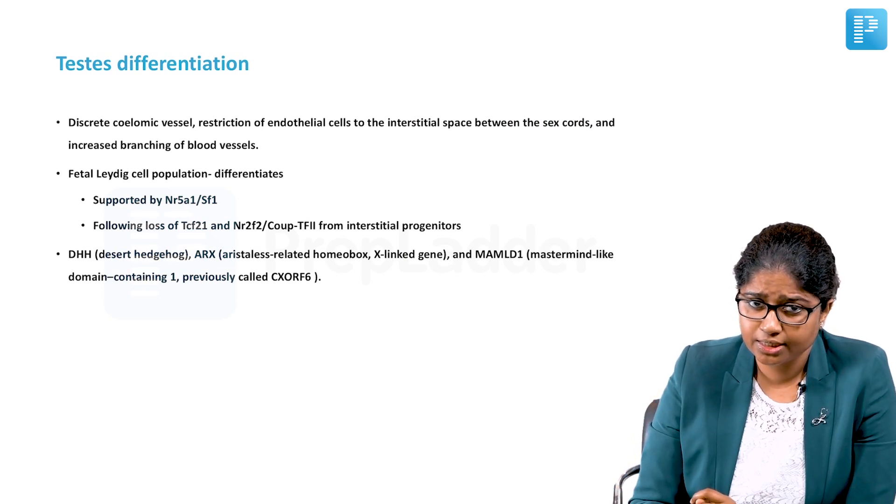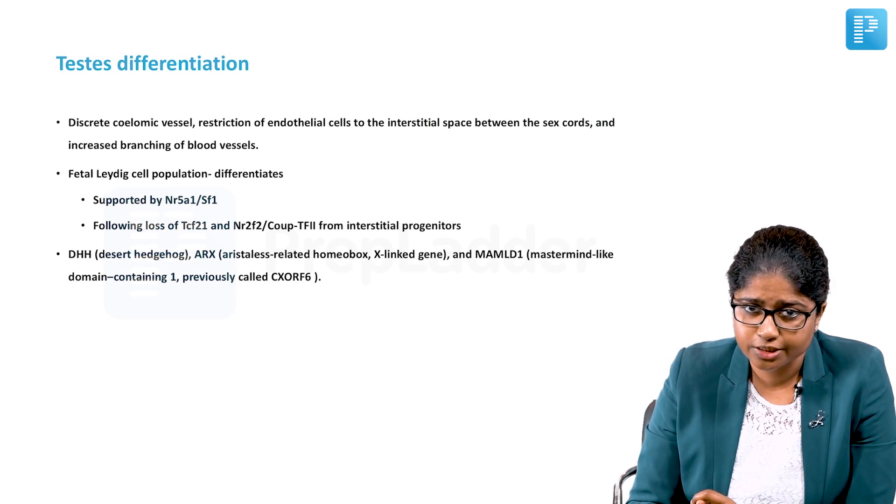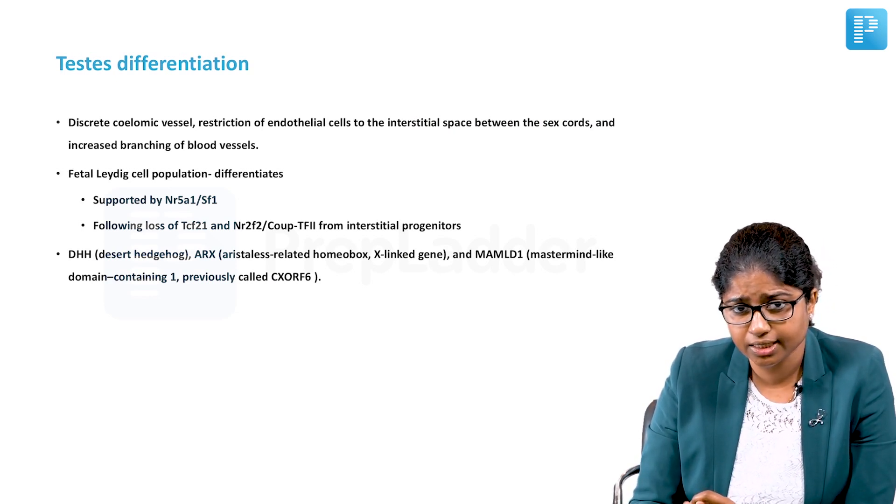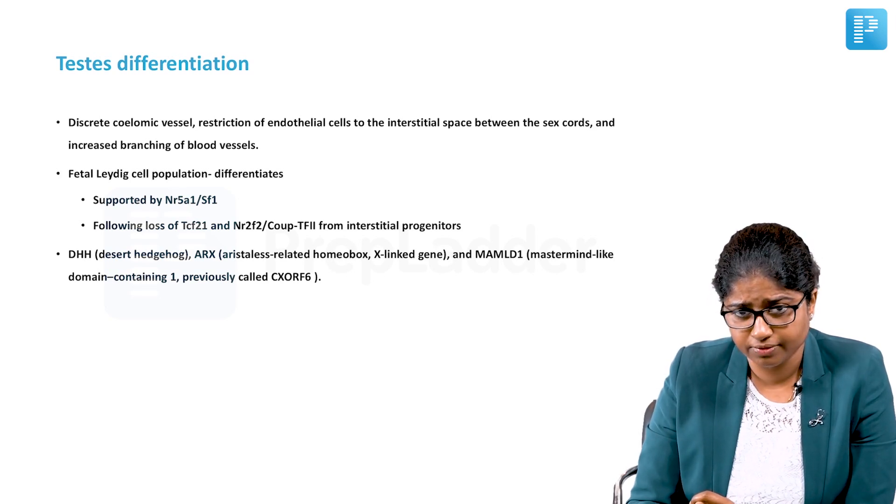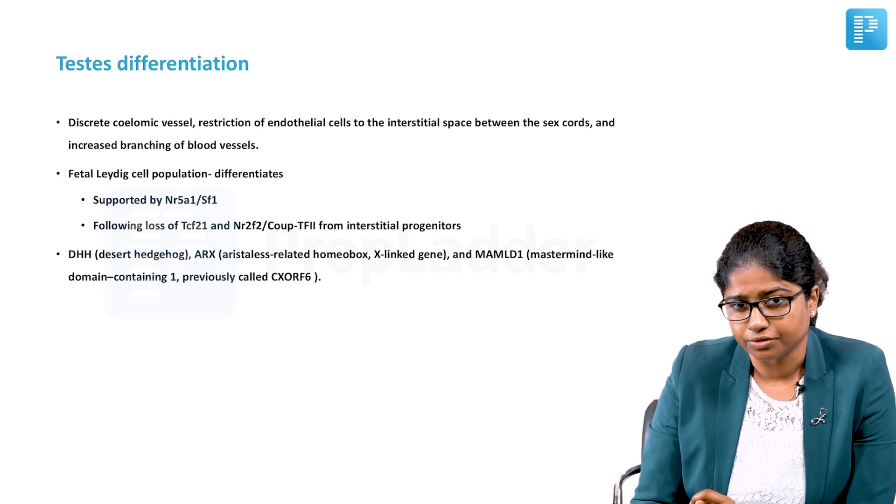There is discrete celomic vessel proliferation, restriction of the endothelial cells to the interstitial space between the sex cords, and increased branching of the blood vessels. This follows the gonadal vasculature development, and then the fetal Leydig cell population differentiates.